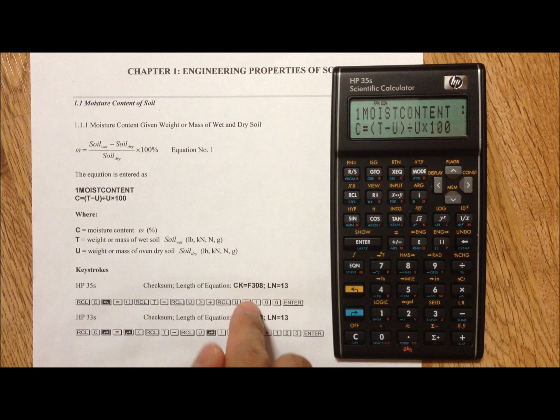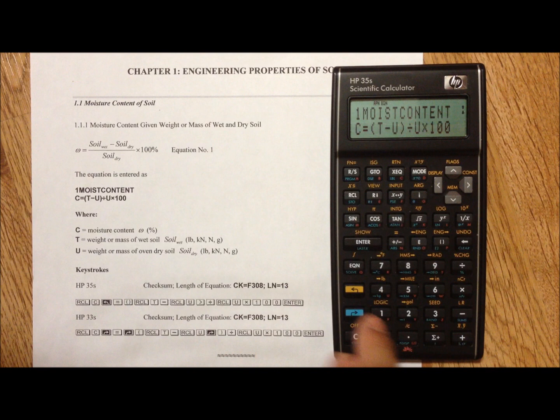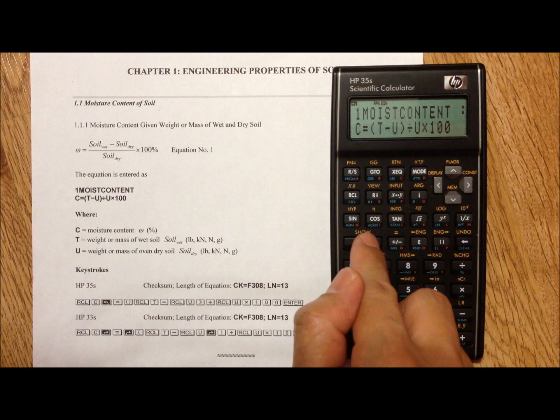Then check the checksum and length of equation to make sure it's the same as shown. To do that, press yellow arrow then hold down the show button.